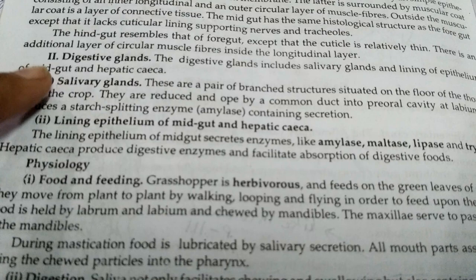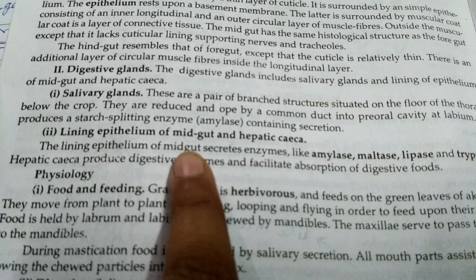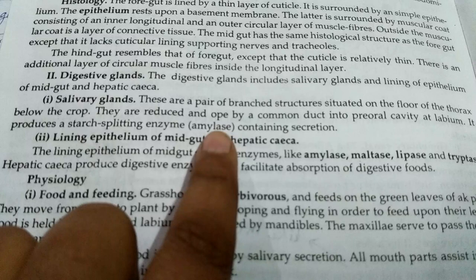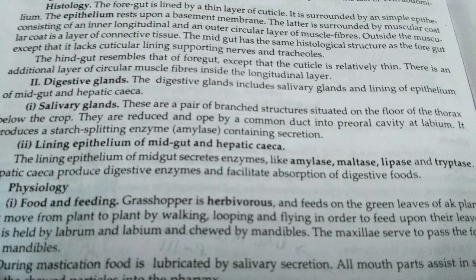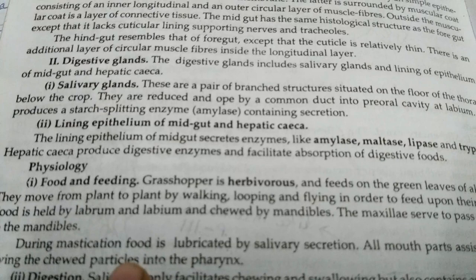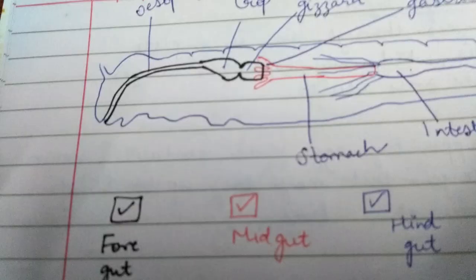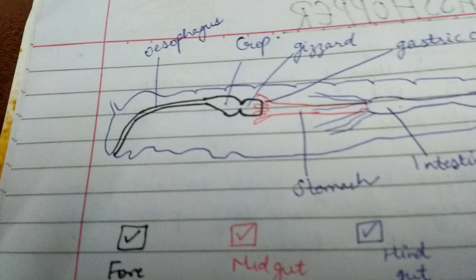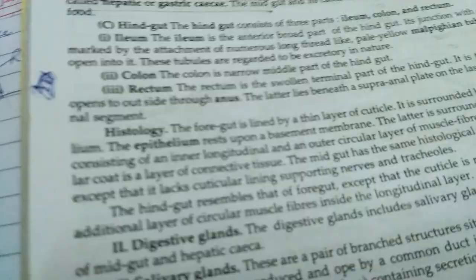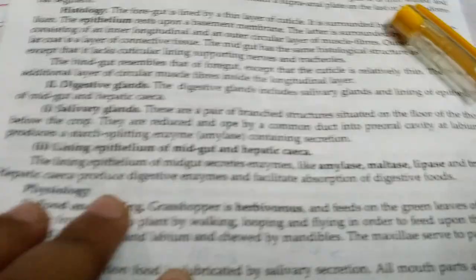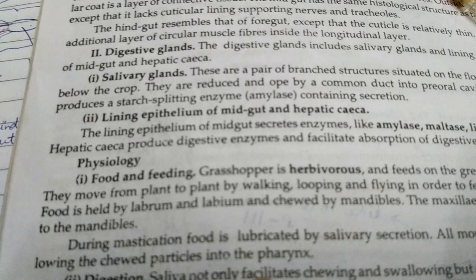The digestive glands include salivary glands, hepatic ceca, and the midgut lining. Salivary glands secrete amylase enzyme, similar to our own salivary amylase. Amylase helps in the digestion of only starch — starch is split into maltose with the help of amylase. Salivary glands are present just below the crop. You can see them here in the diagram, and each has a duct known as the salivary duct.